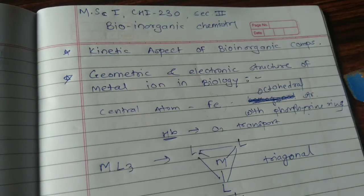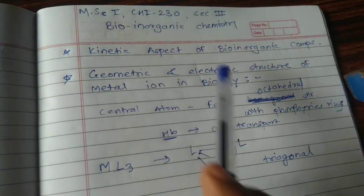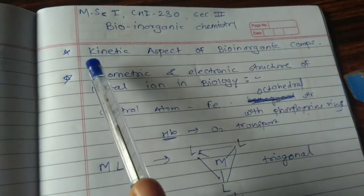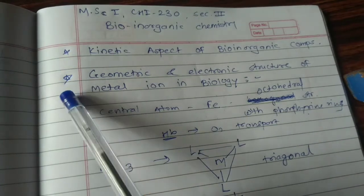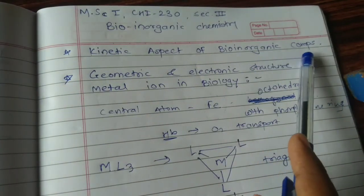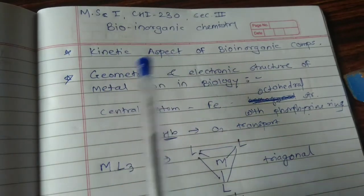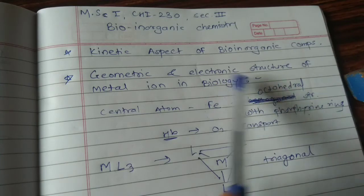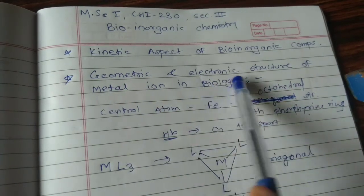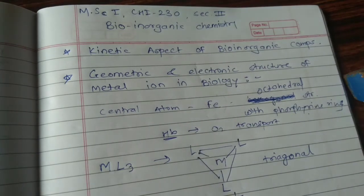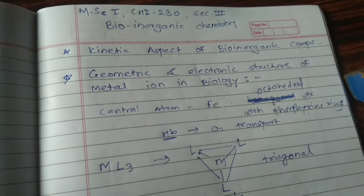Welcome dear students. Today we are going to learn the CHI 230 course, the second section — Bioinorganic Chemistry. We start to learn the kinetic aspect of Bioinorganic compounds. Today we are going to learn the next kinetic aspect, that is the geometric and electronic structure of the metal ion in biology. The geometry and electronic structure present in the metal ion is very important for performing different functions of different biomolecules in biology.